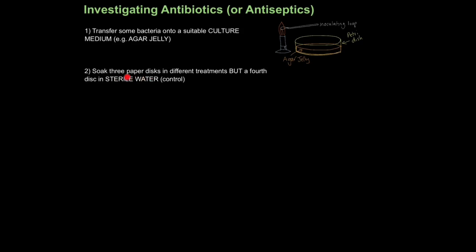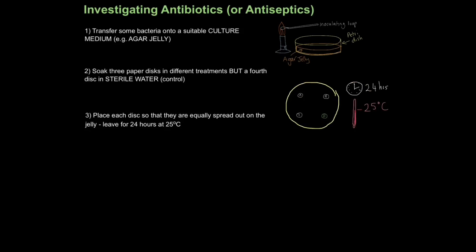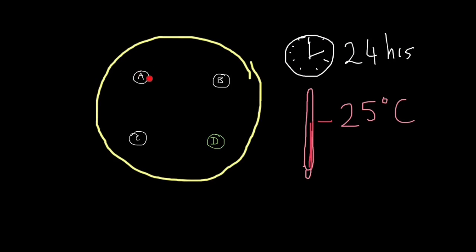Next, soak three paper discs in different antibiotic or antiseptic treatments. You also need a fourth disc soaked in sterile water — this acts as a control because there's no active ingredient in it, giving you something to compare your results against. Place each disc equally spread out on the jelly, making sure they're sufficiently far apart. Leave it for about 24 hours at 25 degrees Celsius — nice and warm to encourage bacterial growth.